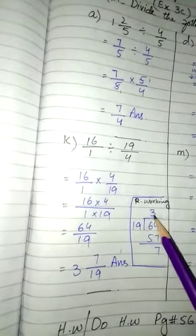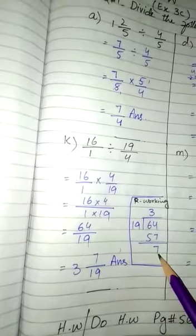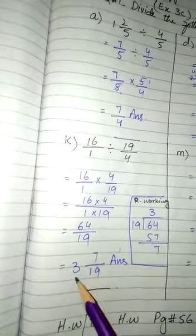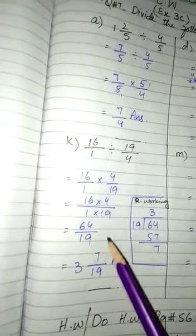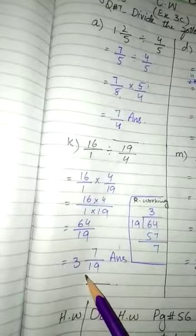64 divided by 19: 19 times 3 is 57. 64 minus 57 is 7, which is our remainder. So our answer is 3 7/19. There was no cancellation here, we simply multiplied them and then converted to mixed number. Next part is M.